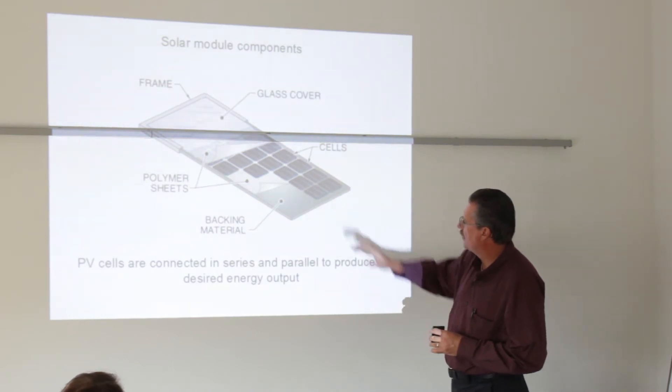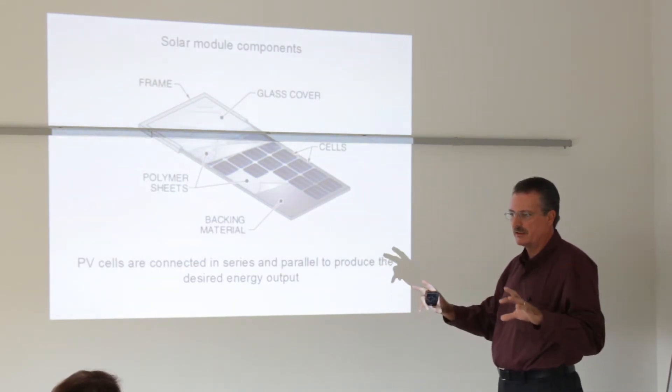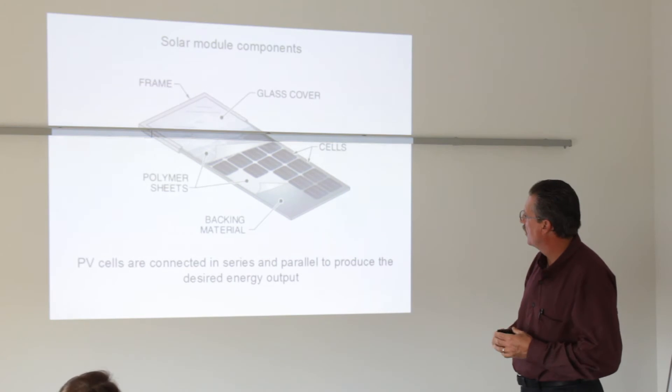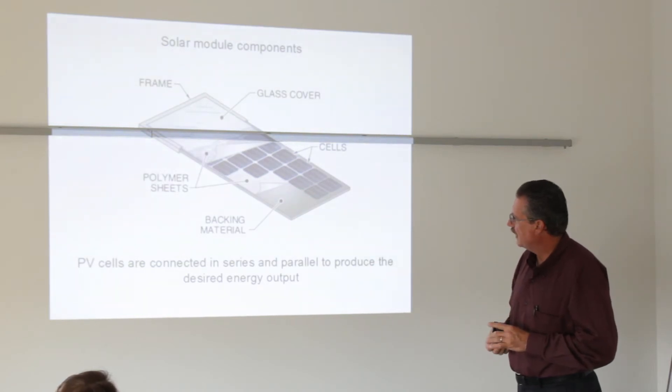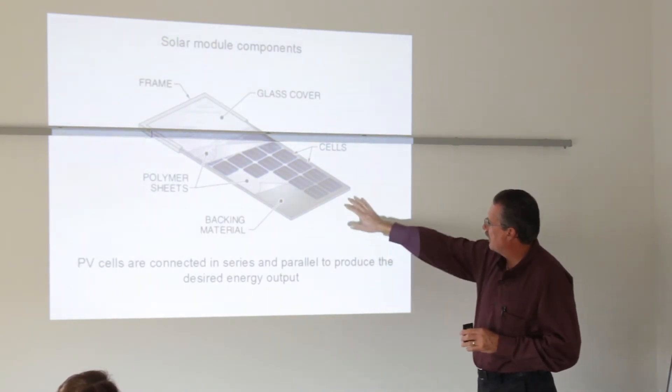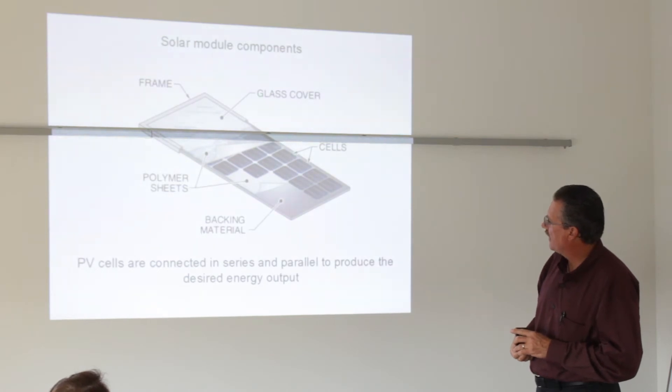When a solar module is manufactured, it is manufactured from cells. The cells are grown in ingots. They're either square or round. Actually, they're all round cylinders. Some are trimmed into squares. Some are left round. They are cut into slices, then treated chemically, and then tested for output to see how they respond under varying light conditions. They are then able to tell how much energy they are going to get off of these cells. These cells are then matched and laid in a very clean room type environment onto a polymer backing.